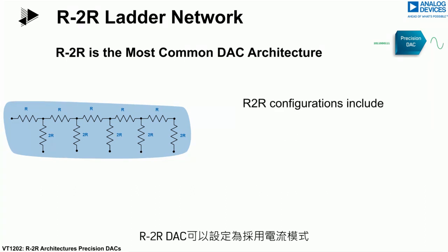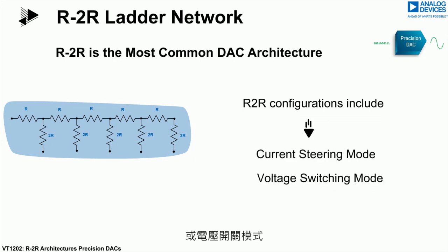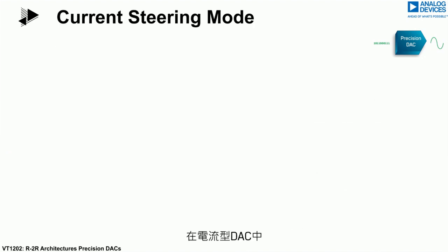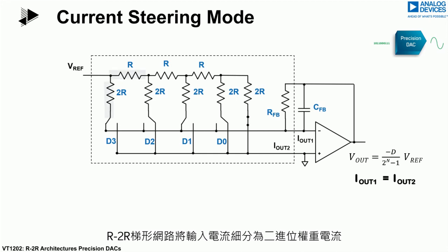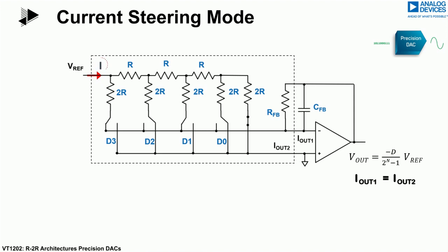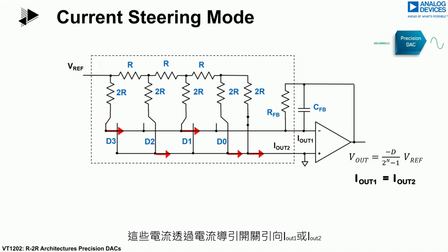R2R DACs can be configured in current steering mode or voltage switching mode. In a current steering DAC, the R2R ladder divides the input current into binary weighted currents. These are steered to I-out 1 or I-out 2 by current steering switches.